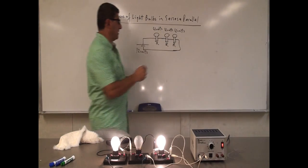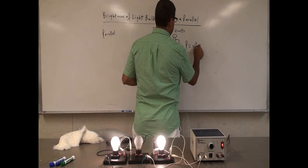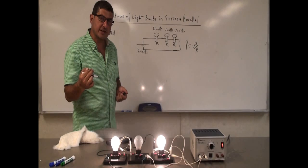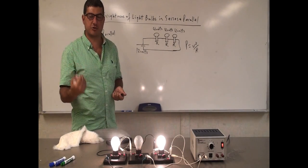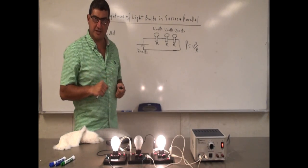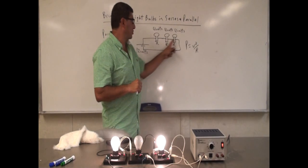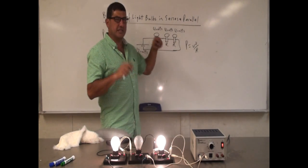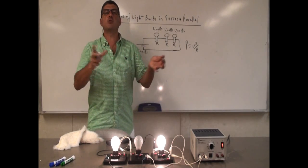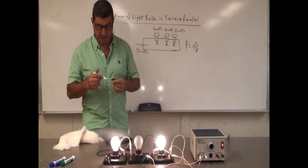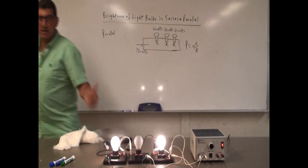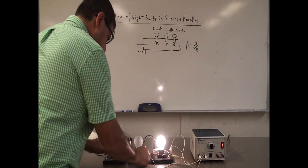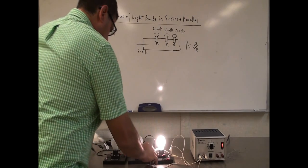So how bright are they going to be? We saw this earlier — when the voltage goes down by a factor of three, the power goes down by a factor of nine. So if I put three of them in series, each of them is going to be nine times dimmer than they would have been if each one was by itself or if they were in parallel. So let's first do two of them in series. How do you do series? I'm going to disconnect this.